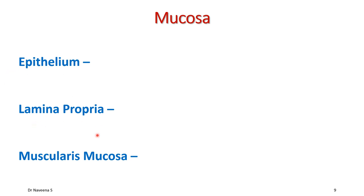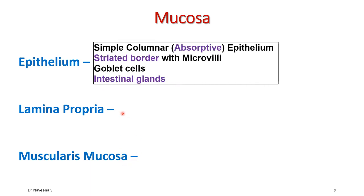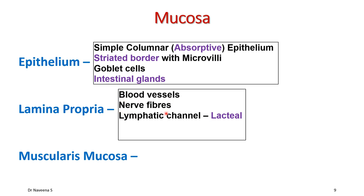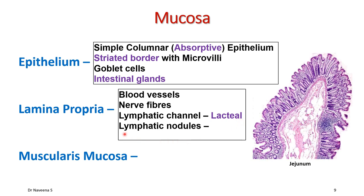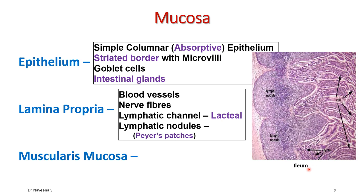The mucosa has three layers — epithelium, lamina propria, and muscularis mucosa — from inside to outside. The epithelium is simple columnar with a striated border and goblet cells, and also forms intestinal glands as crypts of Lieberkühn. The lamina propria contains blood vessels, nerve fibres, and lacteals in each villus. Aggregations of lymphocytes form lymphatic nodules — solitary nodules in the jejunum, aggregating into Peyer's patches in the ileum; such nodules are absent in the duodenum.